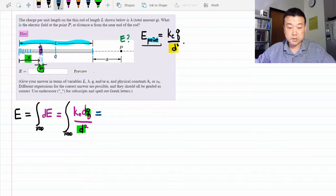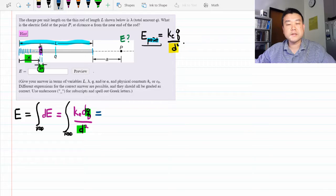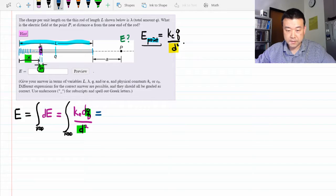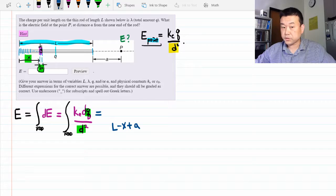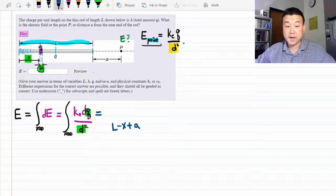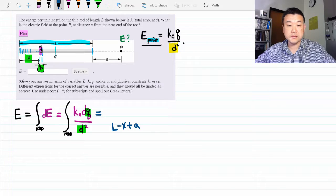The distance is the easier one, so let me do that first. Just looking over the geometry, it looks like the distance is L minus x plus A. You can spot check it to be sure that when x equals 0, the distance is L plus A, and when x is equal to L, the distance is A.